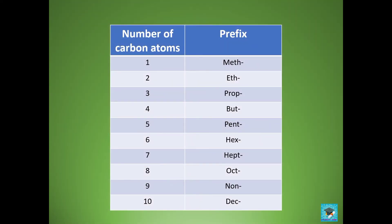Here in this table we can see different numbers of carbon atoms and the prefix used. If we have one carbon atom in the chain we use the prefix 'meth'; for two carbon atoms we use 'eth'; for three, 'prop'; for four, 'but'; for five, 'pent'; for six, 'hex'; for seven, 'hept'; for eight, 'oct'; for nine, 'non'; and for ten carbon atoms we use 'dec'.